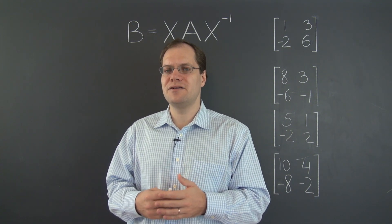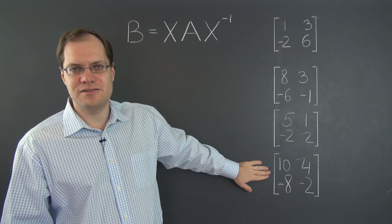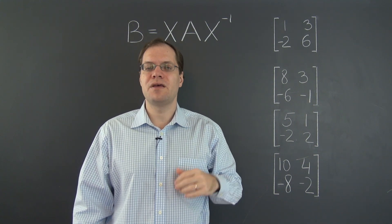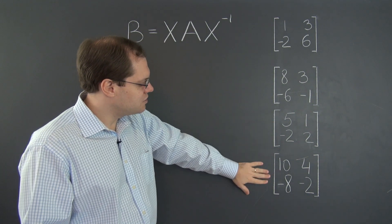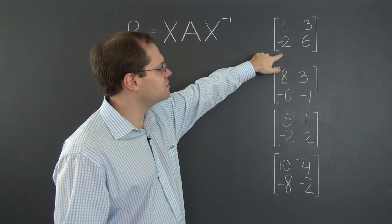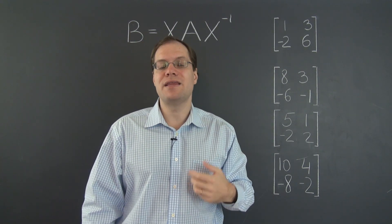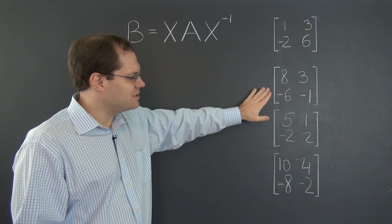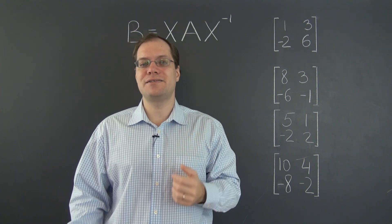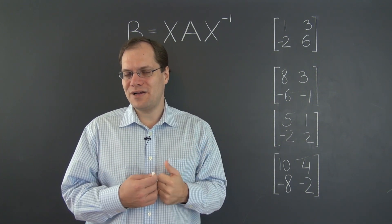So to motivate our present discussion, let me ask you the following question. Which one of these three matrices is related to this one by a similarity transformation? In other words, which one of these three matrices could be the matrix A in a relationship like this so that this one is the matrix B for some invertible matrix X? That's the question and it may or may not be easy depending on how you think about it.